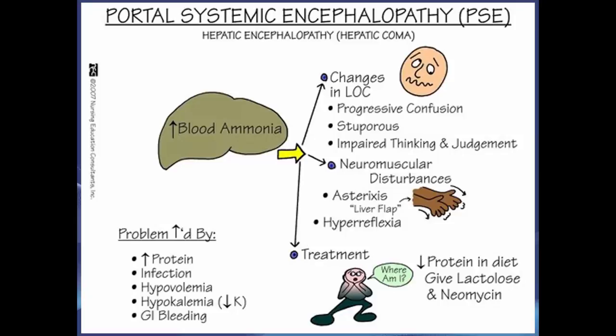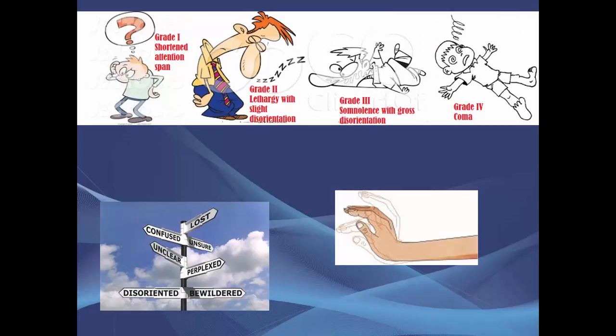Portal systemic encephalopathy is caused by increased blood ammonia. Grades of severity are used to classify how bad the hepatic encephalopathy is, ranging from early asterixis and confusion to coma-like states.